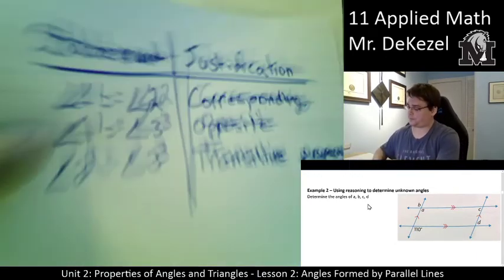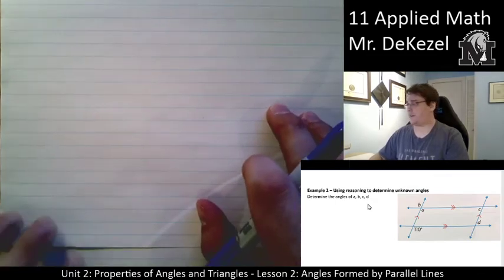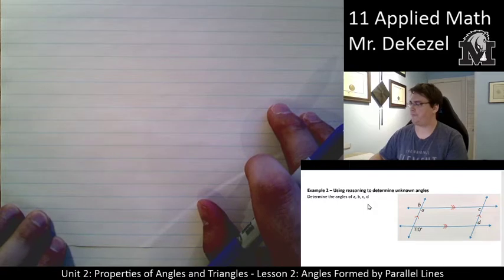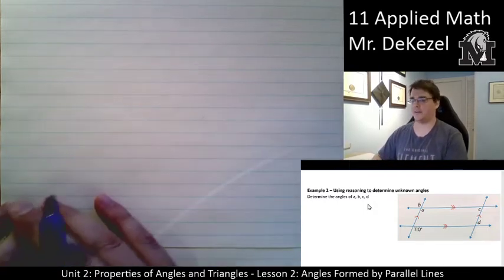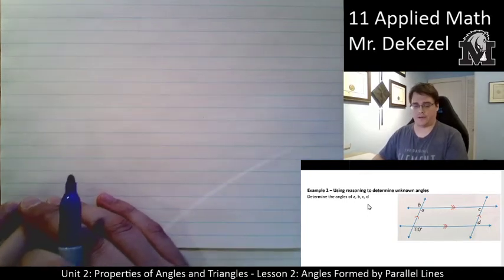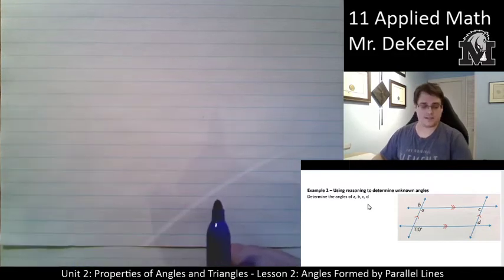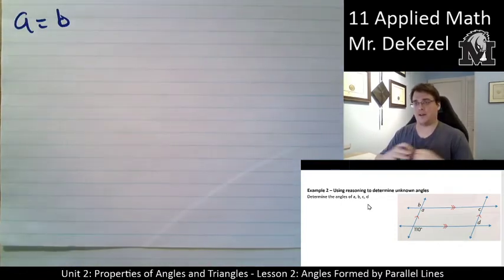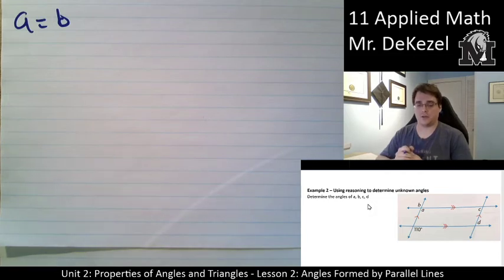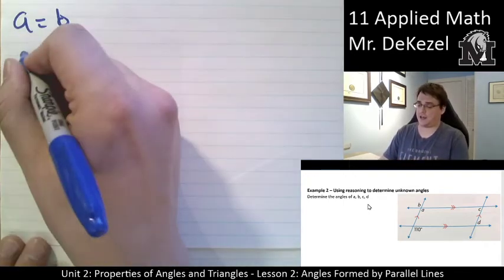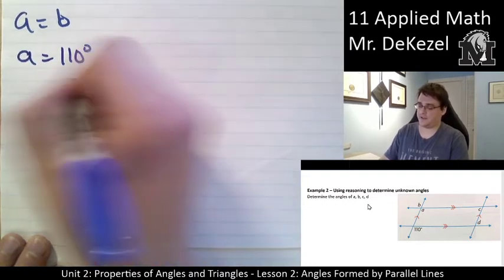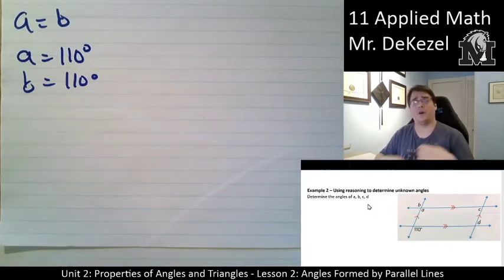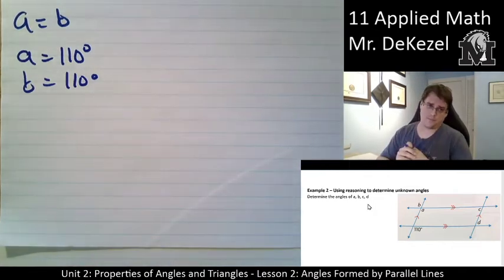Example 2. We are given a parallelogram and we want to determine the unknown angles A, B, C, and D. I know that A and B are equal to one another — they are opposite angles. A is corresponding to the angle of 110 degrees, so A is equal to 110 degrees. And because A and B are the same, B would also equal 110 degrees.